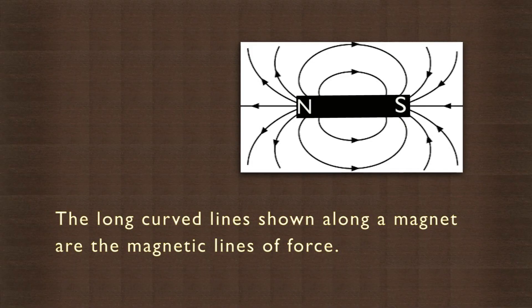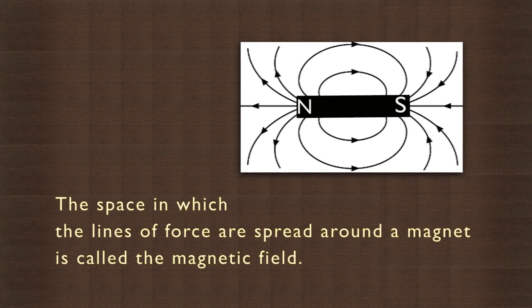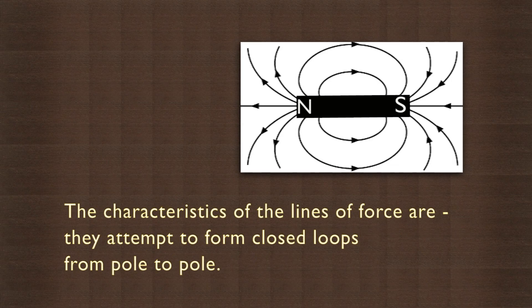If we draw a diagram of this on paper, it will look like this. The long curved lines shown along a magnet are called the magnetic lines of force. They run from the north pole to the south pole. The space in which the lines of force are spread around a magnet is called the magnetic field.